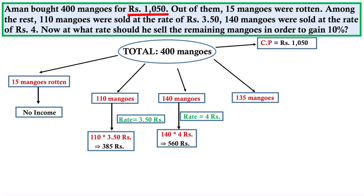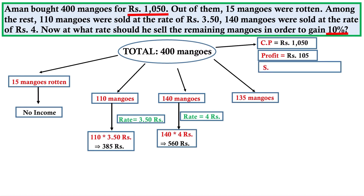If you look at the cost price and work out the profit — 10% profit. So 10% of 1050 is 105. Therefore, selling price equals CP plus profit, that is 1050 plus 105, which gives us 1155.